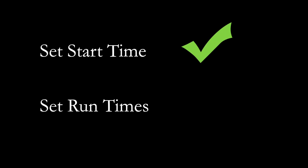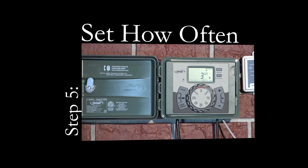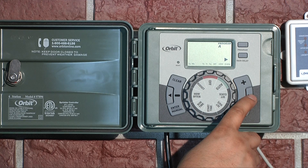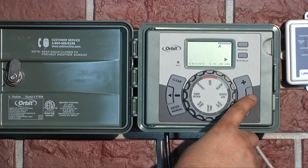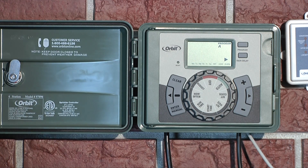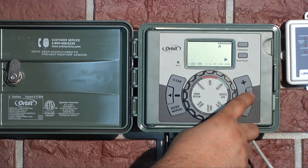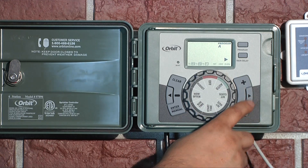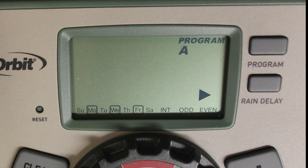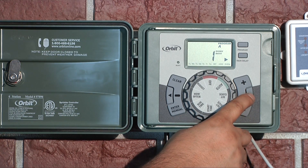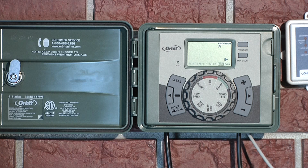With your start time and run time set, the final step is to tell your timer how often to water. Turn the dial to How Often. You can set the timer to water on specific days of the week, odd or even calendar days, or you can set it to water in intervals. To water on specific days of the week, use the arrow buttons to toggle between days and press enter for each of the desired days — a square will appear around the days you have selected. To water on odd or even calendar days, use the arrow buttons to toggle to odd or even and press enter.